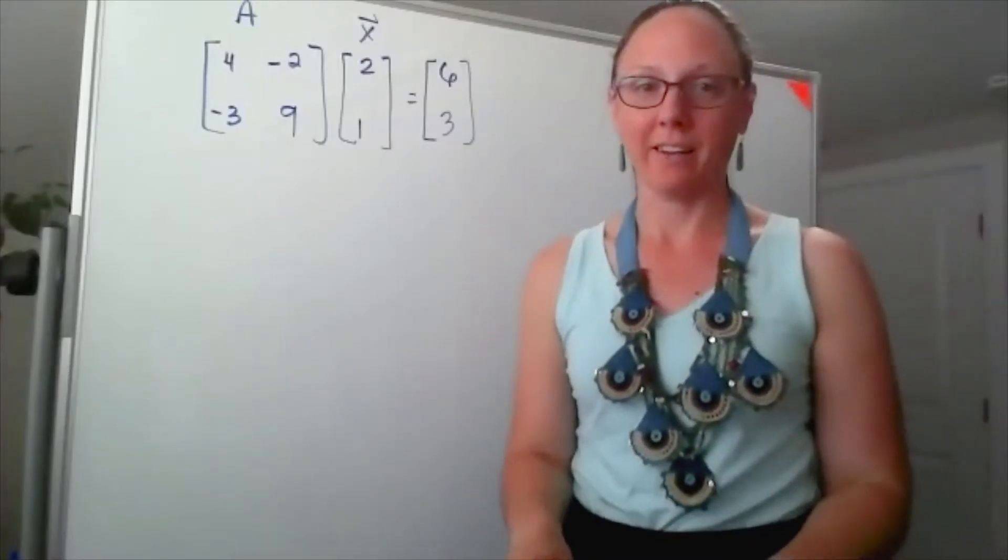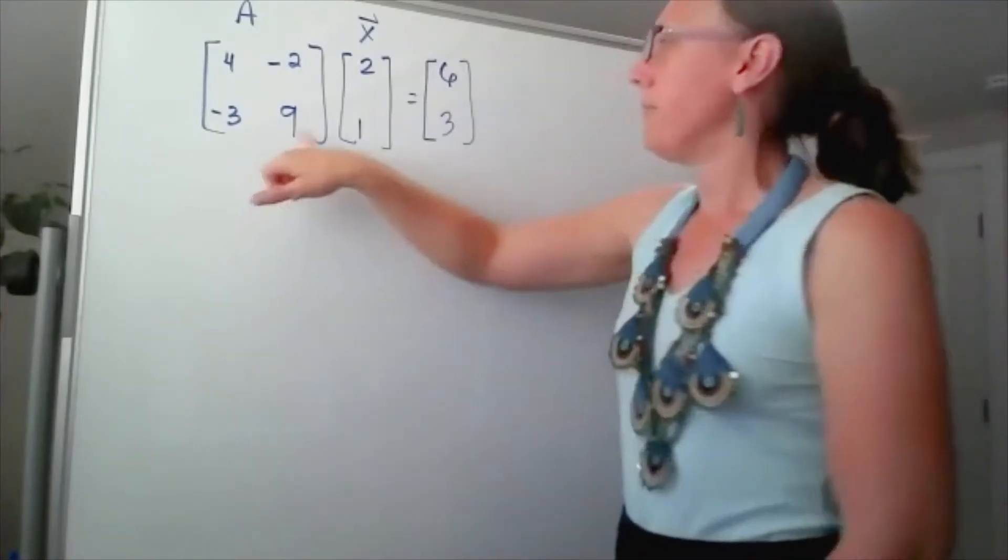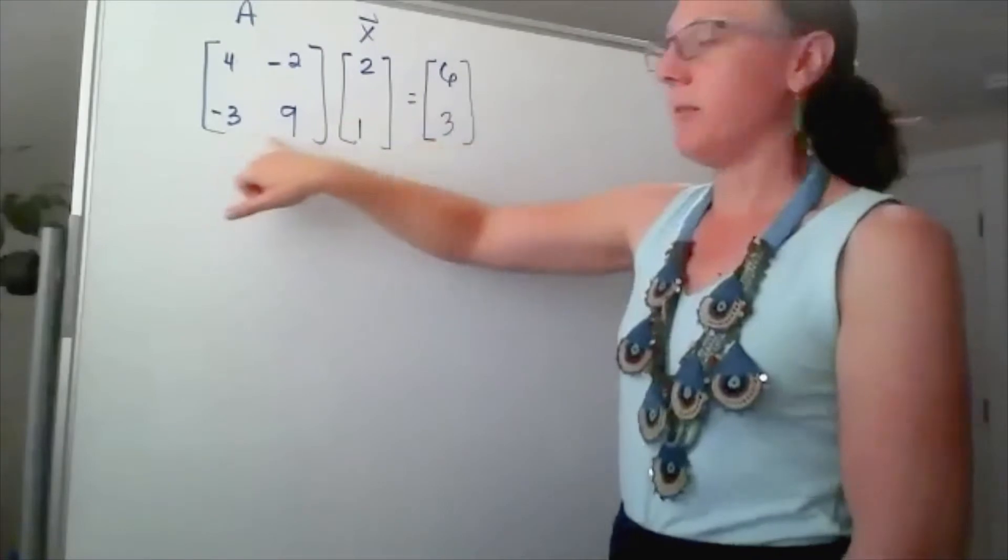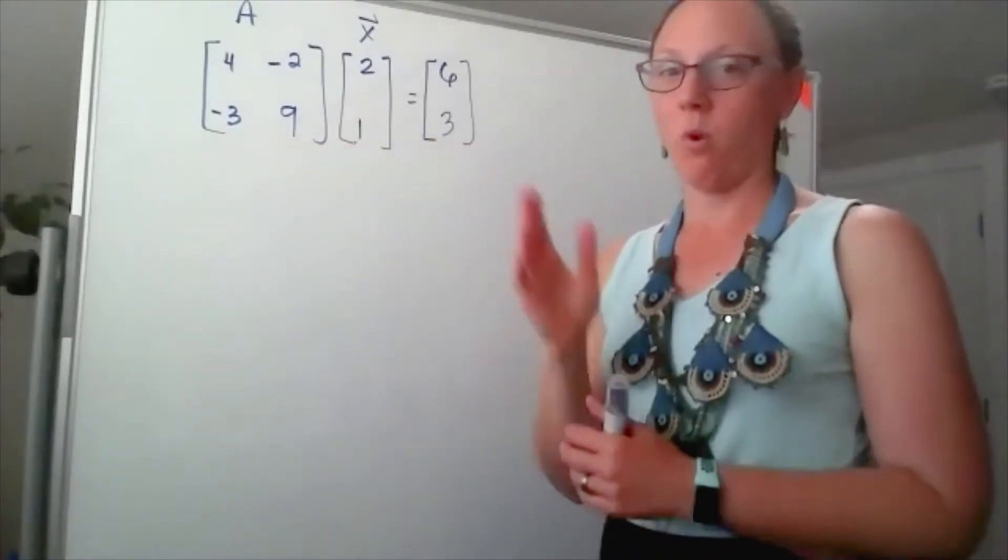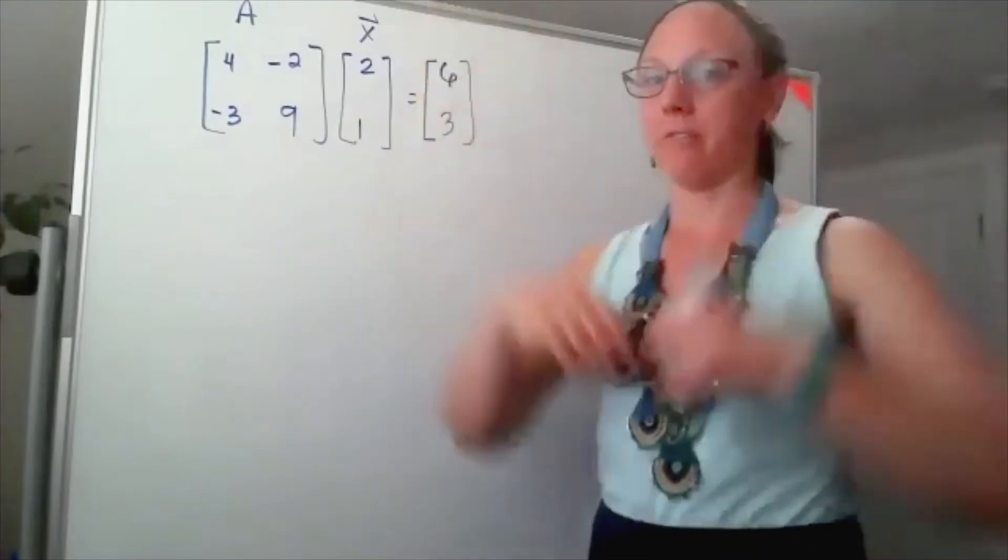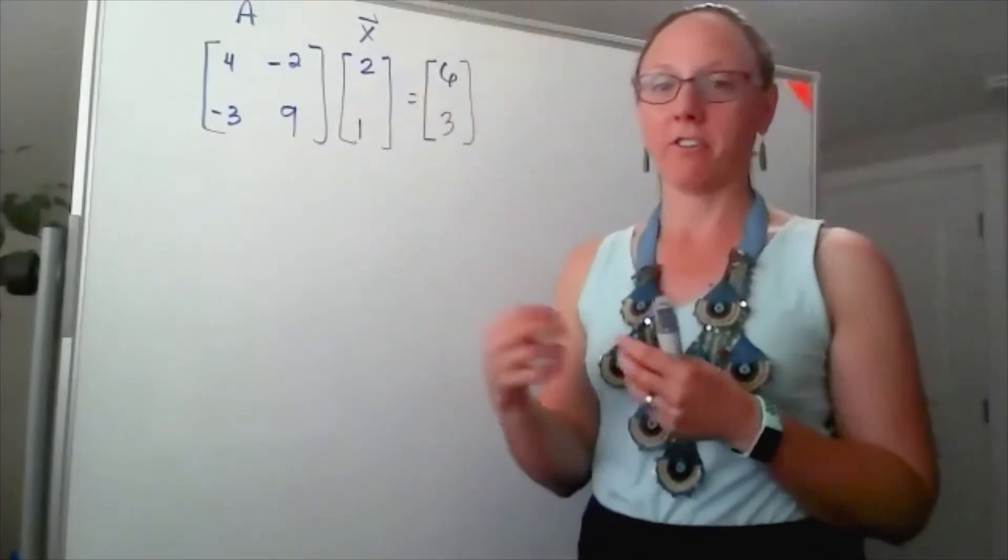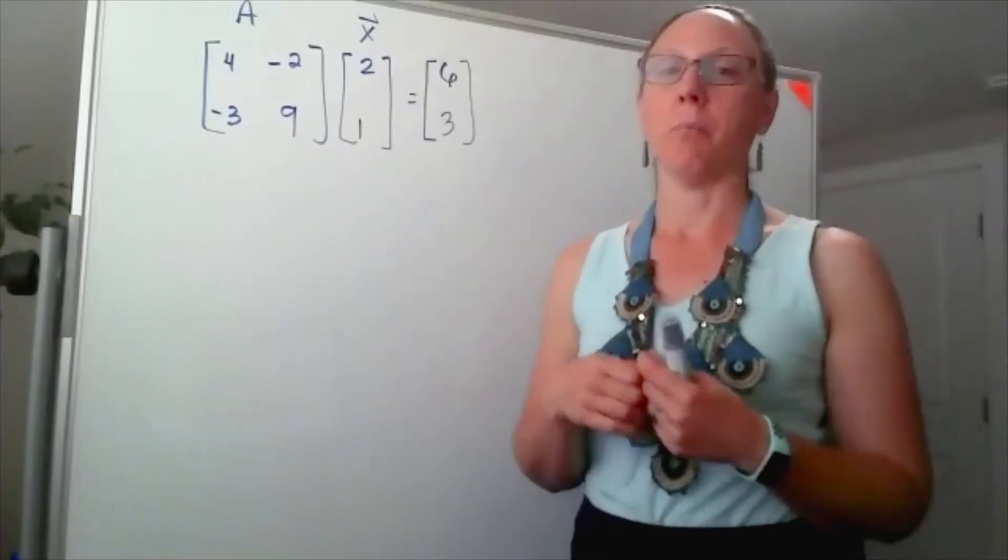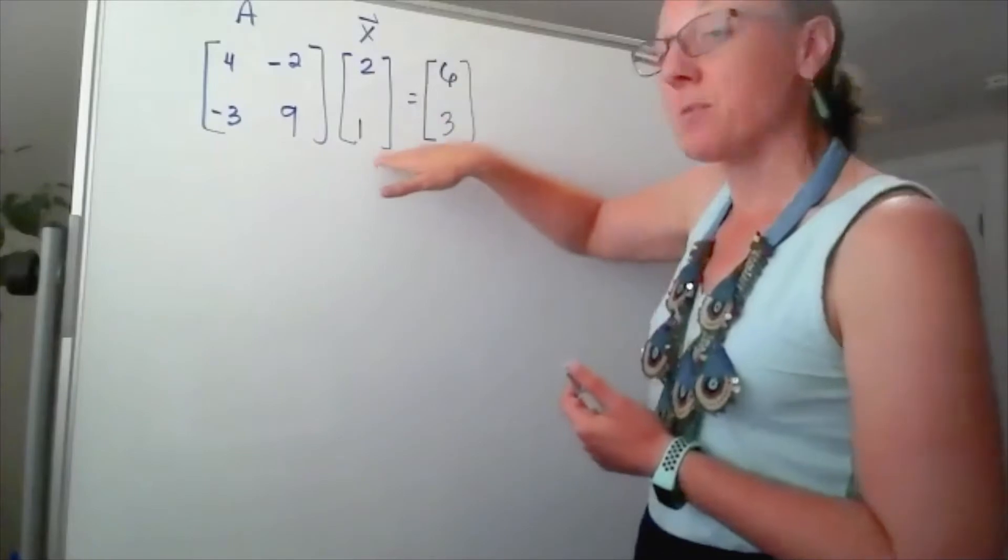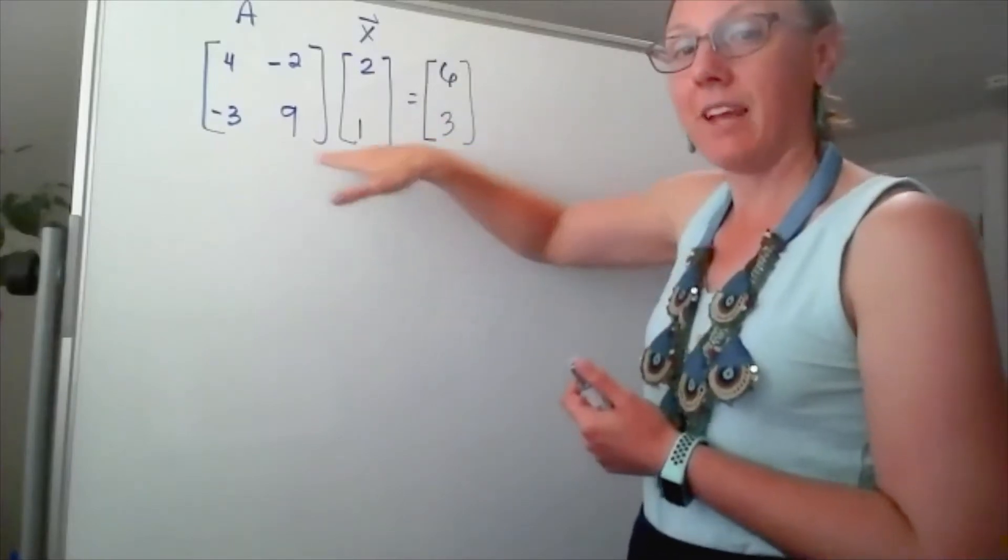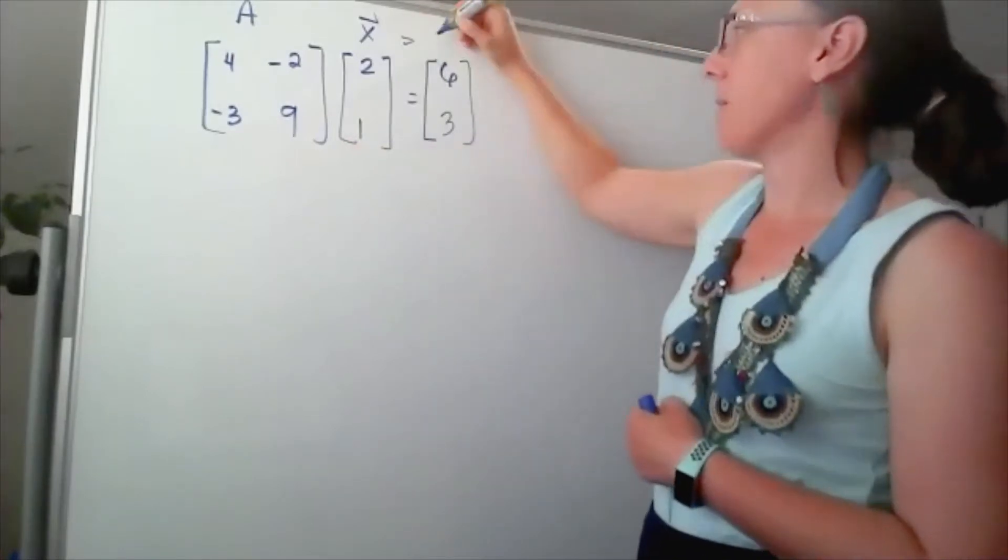Multiplying this vector by the matrix, which in general sends one vector to another vector - okay not random, it's a linear transformation - changes both the length and direction. For this particular vector and this particular matrix, multiplying those together I ended up